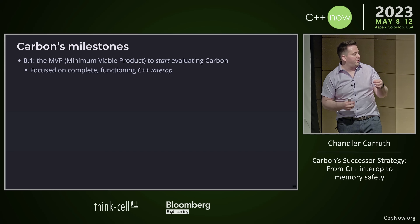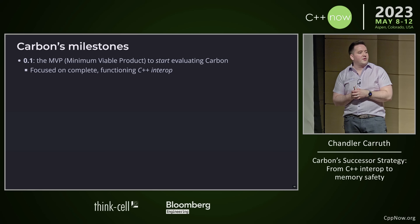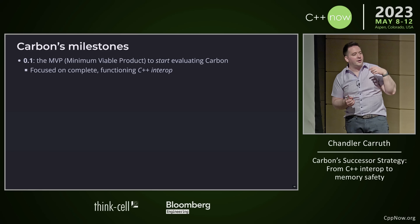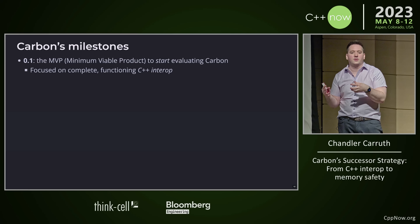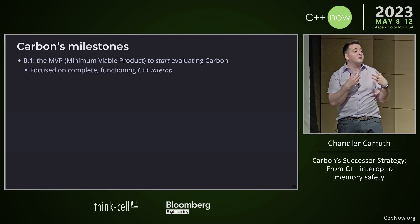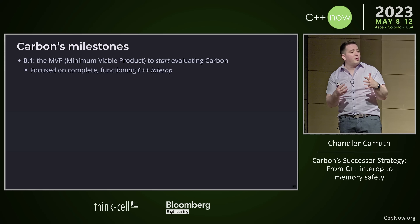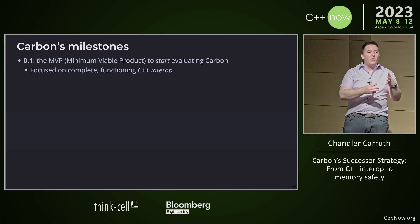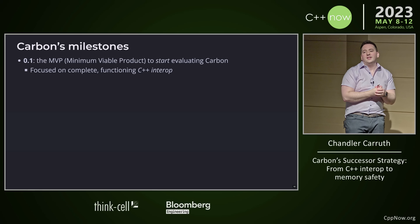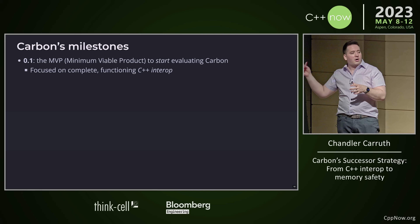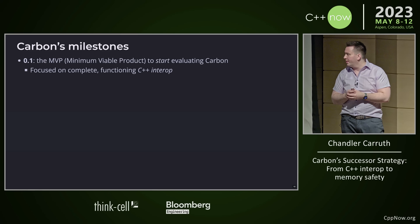We've started to put down some concrete and specific milestones. The first one is around an MVP, a 0.1 release that's a minimum viable product for folks to evaluate Carbon as a successor. This is really focused on C++ interop and all of the dependencies that come along with C++ interop. That's probably going to be the next big major milestone for Carbon.